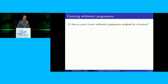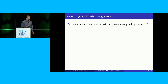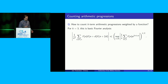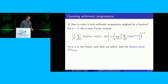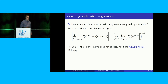What about the third conjecture, about counting arithmetic progressions? There's a concept called the Gowers norm which appears here. How can you count k-term progressions weighted by a function? If you're looking at three-term progressions, this is quite easy using basic Fourier analysis — you can bound this by the Fourier norm of f. However, when you have four-term progressions and longer, it's known that the Fourier norm no longer suffices. You need something stronger, called the Gowers norm of f, the U^k_X norm.